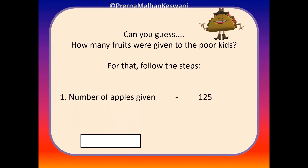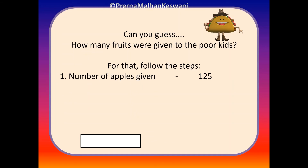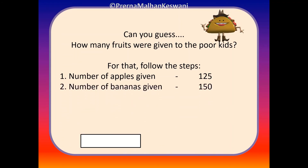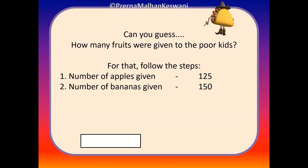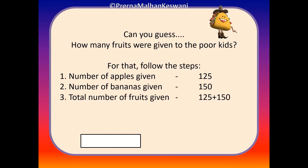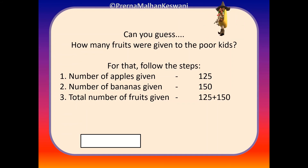The first step: the number of apples given, which was 125. The second step: the number of bananas given, which was 150. The last step: total number of fruits given — 125 plus 150.